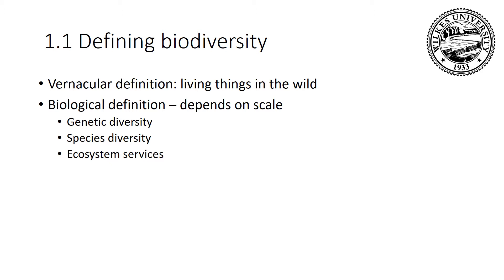Probably the most common way biodiversity is recognized is species diversity — how many species are out there. Another way of defining biodiversity is how many ecosystem services are in a particular site, such as how many decomposers, nitrogen fixers, pollinators, and seed dispersers are at a particular site.